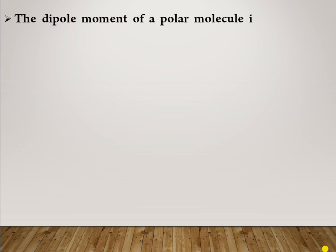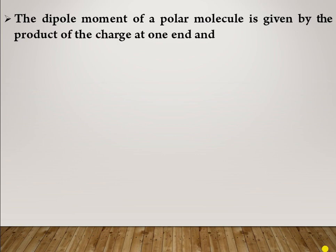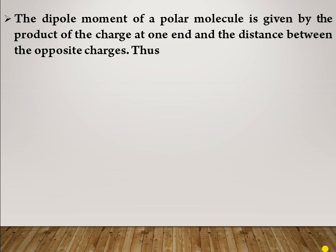The dipole moment of a polar molecule is given by the product of the charge at one end and the distance between the opposite charges. Thus, the equation for dipole moment is: μ = q × r. Mu is the product of the charge at one end and the distance between the opposite charges.